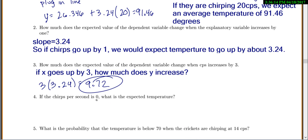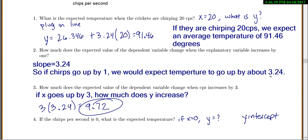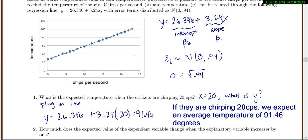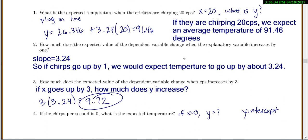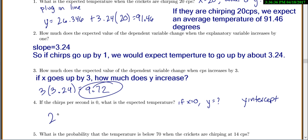If the chirps per second is 0, what's the expected temperature? So this is saying if x equals 0, what is y? Or in other words, it's saying find the y-intercept. So come back up to our equation. We said our intercept is 26.346 degrees. So if our chirps per second is 0, the expected temperature is 26.346.